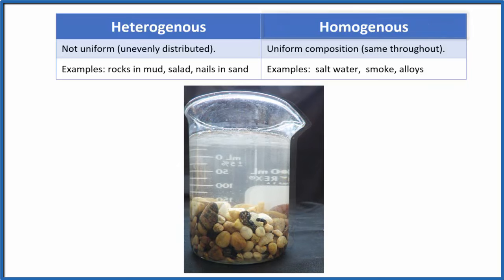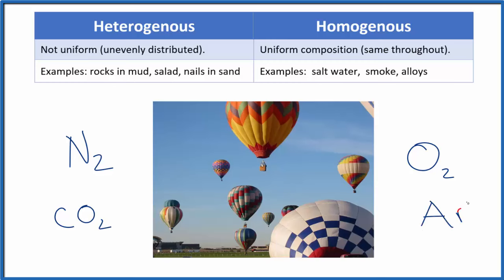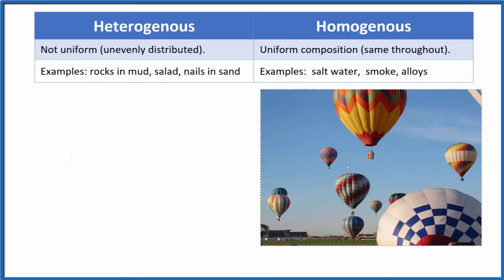Let's try some examples to make sure you understand this. What about air — is it heterogeneous or homogeneous? Air is made up of a mixture of gases: mostly nitrogen (N2), about 21% O2, and then some CO2 and argon. But these gases are all mixed up and evenly distributed in air — we don't have nitrogen on one side and oxygen on the other. It's all spread out evenly, so air is homogeneous.